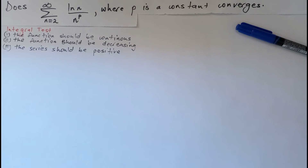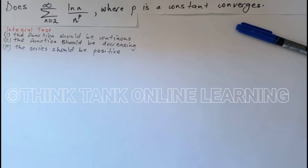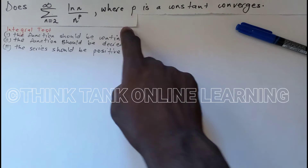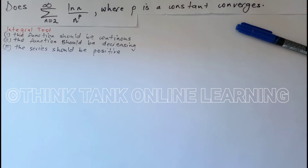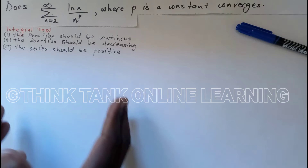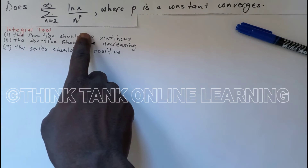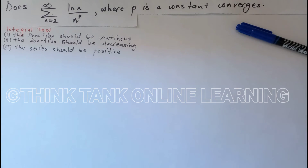Welcome back to Think Tank Online Learning. In this video we're going to look at divergence and convergence of series. Given a series where you want to determine if it converges, and also given the value of p — p is just a constant. This is a p-series. If you don't know what a p-series looks like, go to Think Tank Online Learning where I've uploaded a 40-minute video explaining all the methods used to test this series.